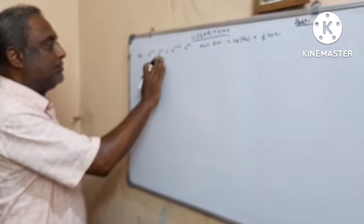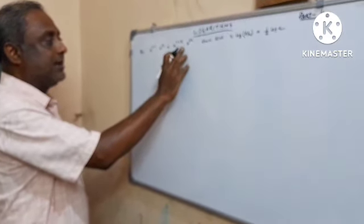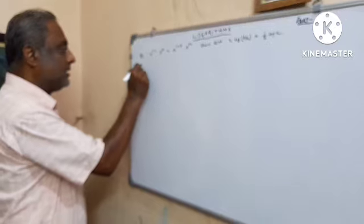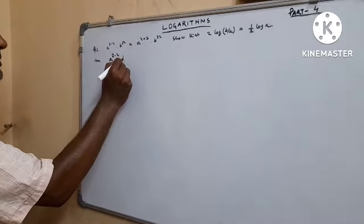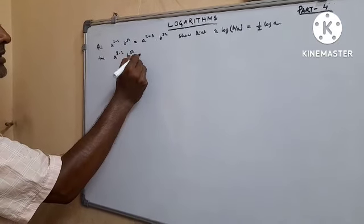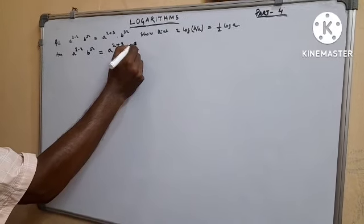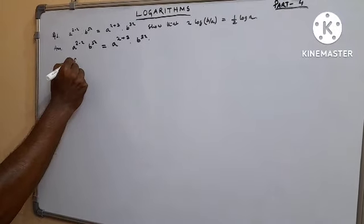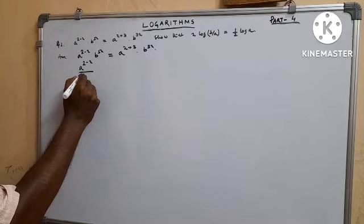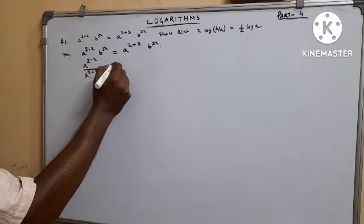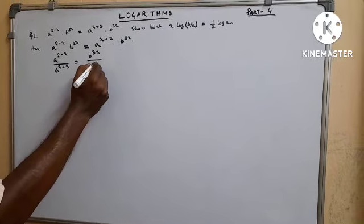Starting the answer: a^(2−x) · b^(5x) = a^(x+3) · b^(3x). Rearranging: a^(2−x) divided by a^(x+3) equals b^(3x) divided by b^(5x).